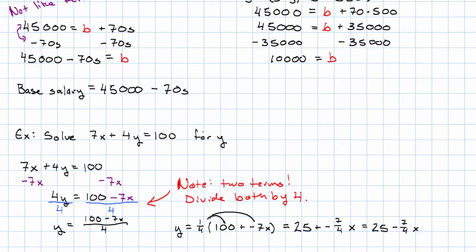So we get 25 minus 7 fourths X. Our answer, fully simplified, is Y equals 25 minus 7 fourths X. Good!